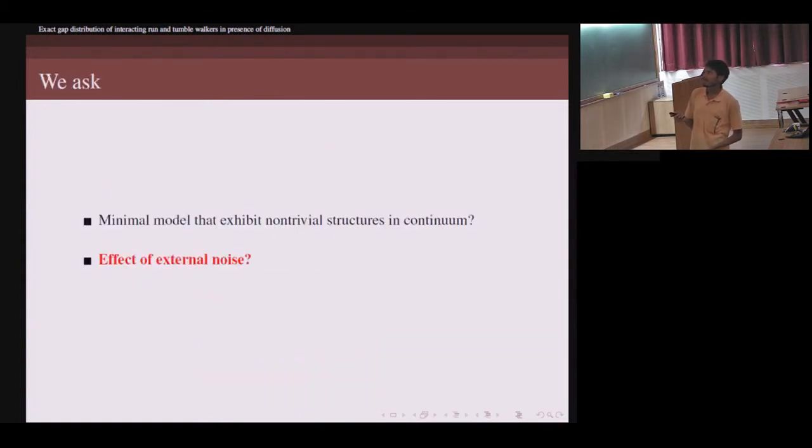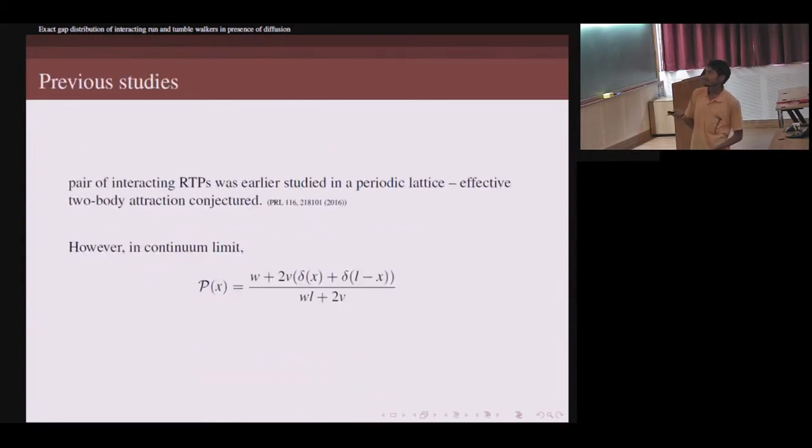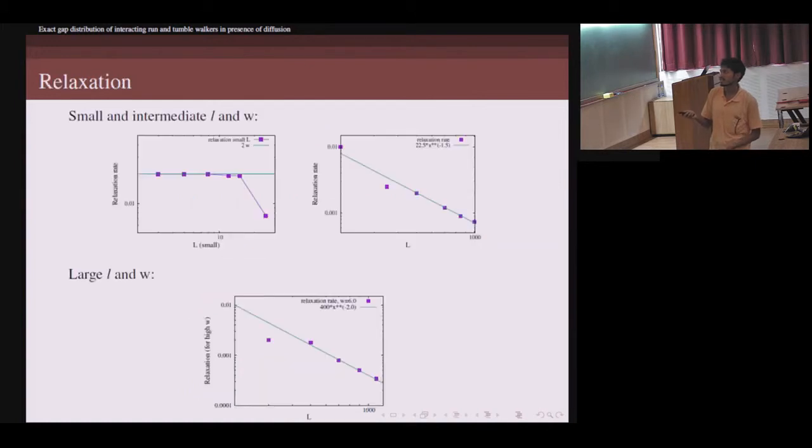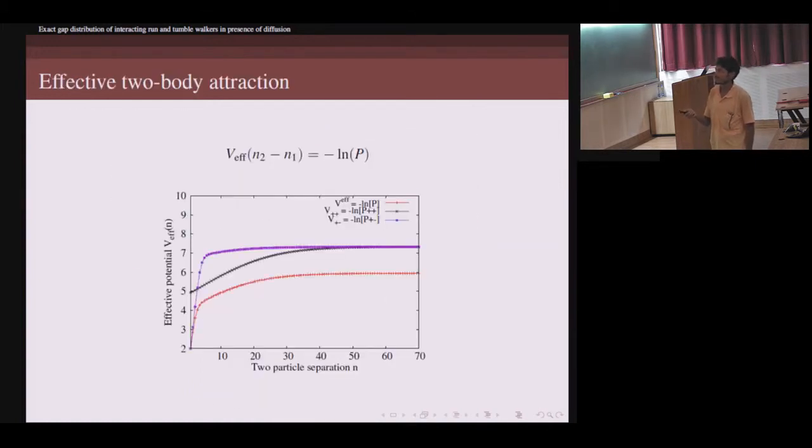As conjectured by this paper, we can also find an effective attractive interaction between these two particles. I mean, assume these particles are passive but then which kind of interaction gives rise to this kind of steady state? This is the effective potential and it takes this form. So this is the effective potential and it has an attractive core here. One of the motivations is to see whether this kind of attractive potential, when active with two-body potential applied for many particle system, can give rise to condensation. This is what needs to be seen.